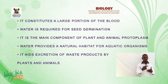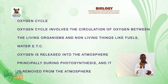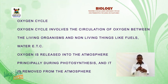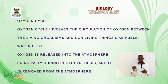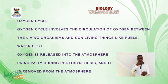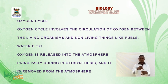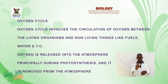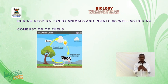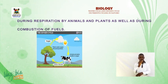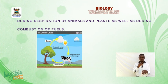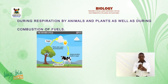Now let us discuss the oxygen cycle. The oxygen cycle involves the circulation of oxygen between living organisms and non-living things like fuels and water. Oxygen is released into the atmosphere principally during photosynthesis, and it is removed from the atmosphere during respiration by animals and plants, as well as during combustion of fuels. Look at the diagram of the oxygen cycle and take note of the direction of the arrows.